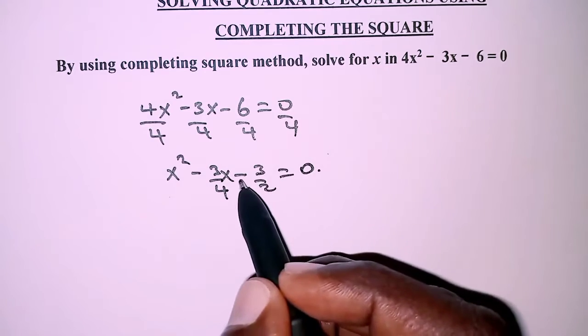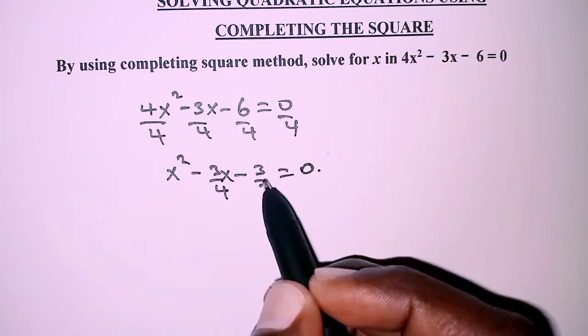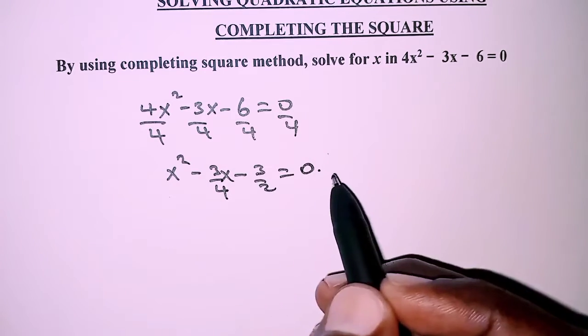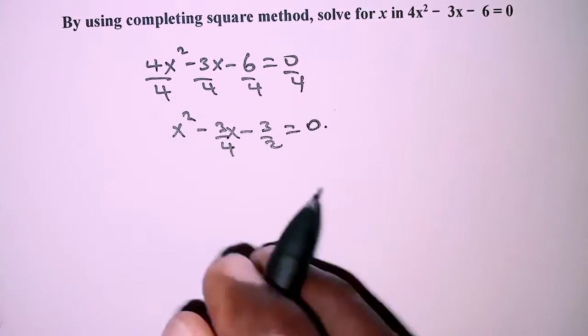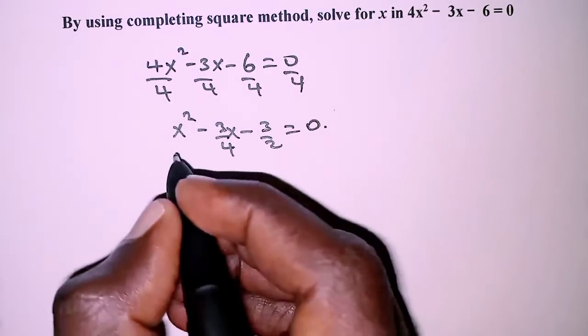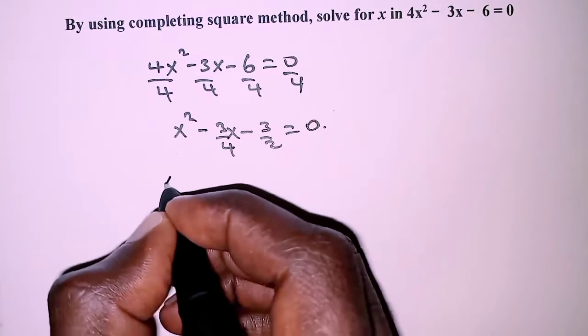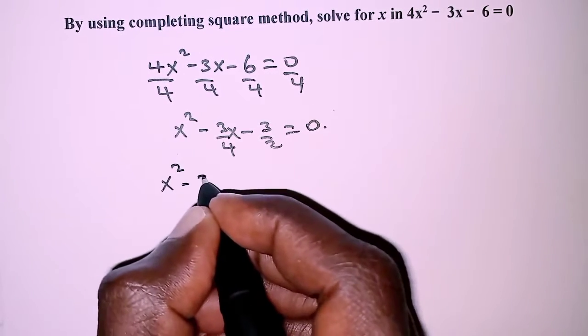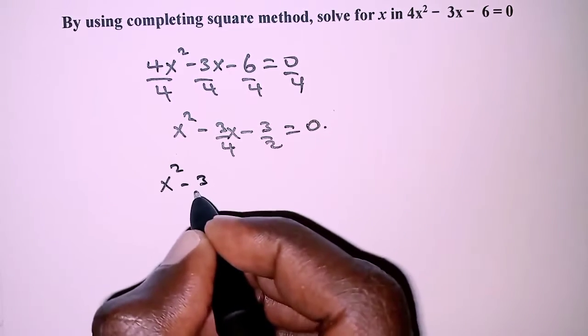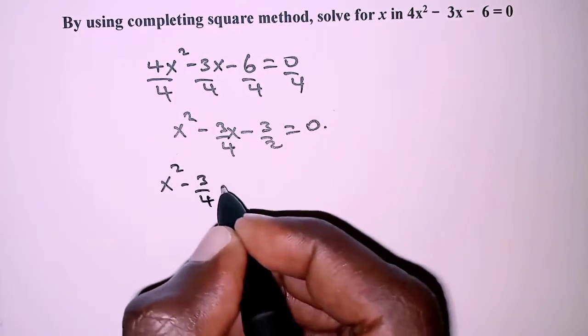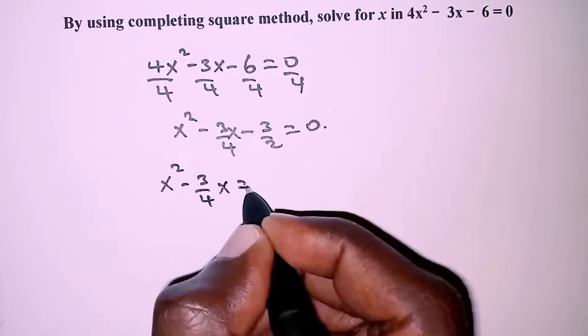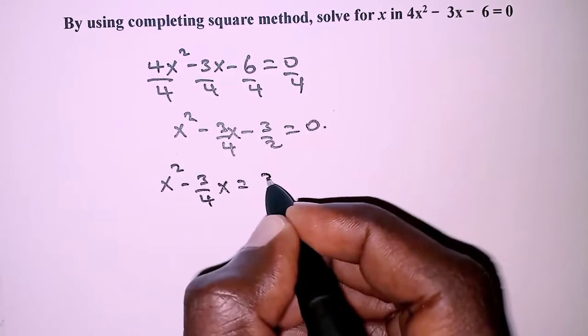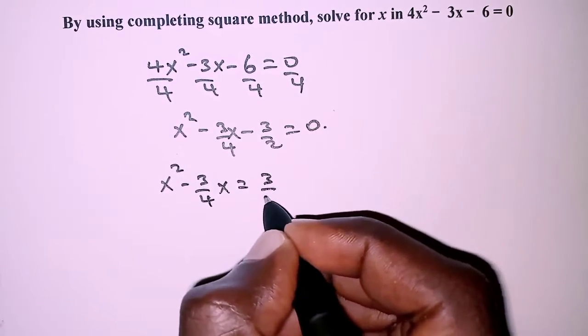The next step is to take negative 3 over 2 to the right hand side, so that on the left hand side we have x squared minus 3 over 4 x, which is equal to 3 over 2.